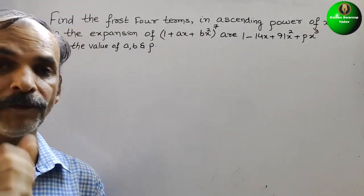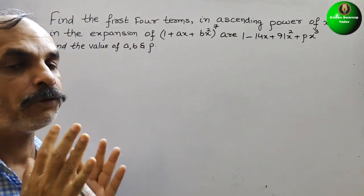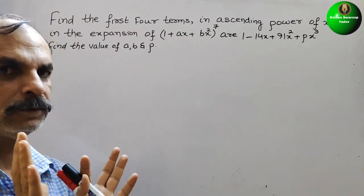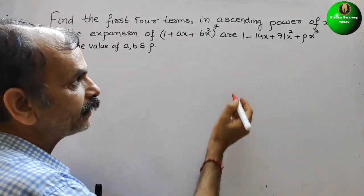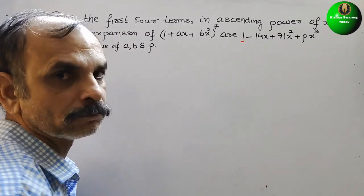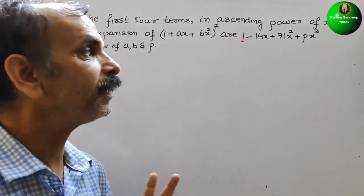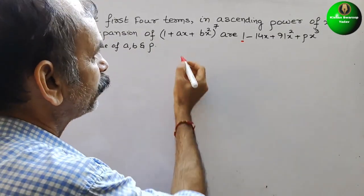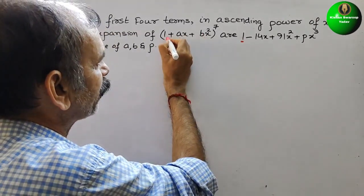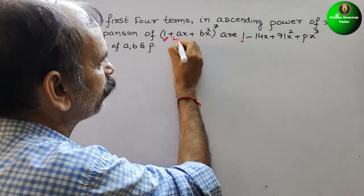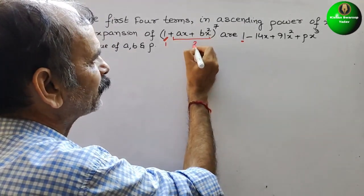So how will we solve it? They have told first four terms. If you compare this, you will get 1 here only. So here we have to take this as the first term and this will be your second term — first and second term.